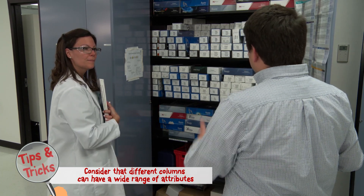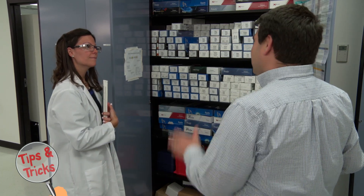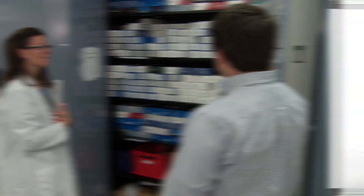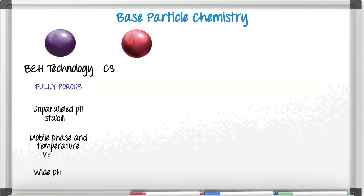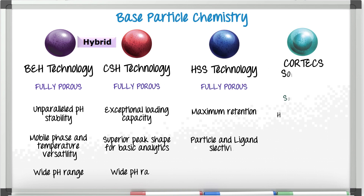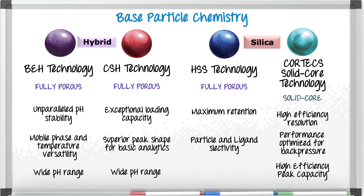There are quite a few, but I can show you a simple approach on how to select the right column for your separation. If we take a look at our base particles, to the left we have our hybrid particles and to the right we have our silica-based particles. Our hybrid particles — BEH technology and CSH technology — are excellent when used in alkaline mobile phase. Our silica-based particles, HSS and Cortex, are designed for low pH mobile phase, with HSS having maximum retention and Cortex having high efficiency and resolution.